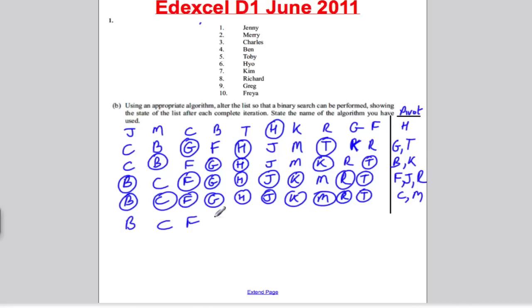And then you lastly pivot on the solos, which are C and M, and then you've got your list. So it's B, C, F, G, H, J, K, M, R, and T, and you're done with that.